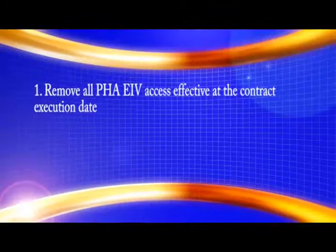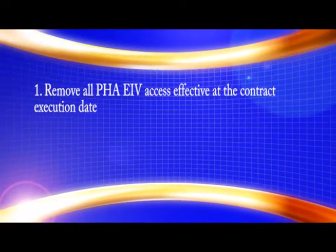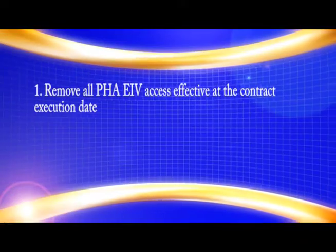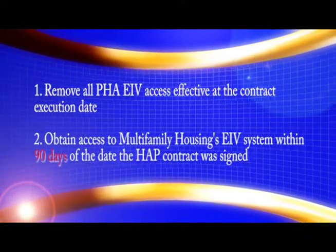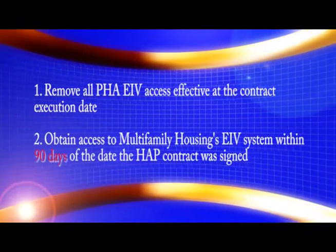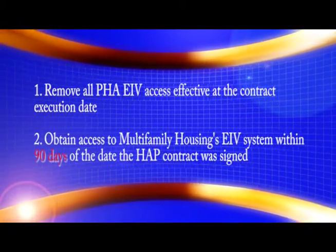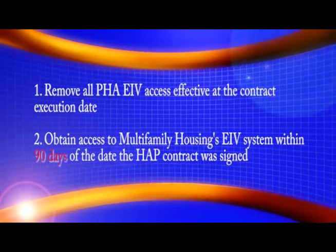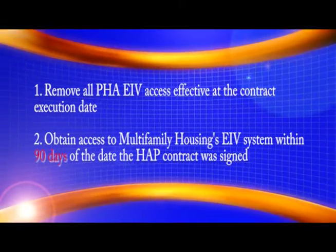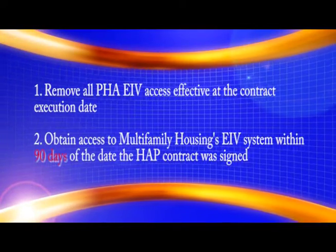PHAs converting to PBRA have two major EIV changes after closing. First, remove all PHA EIV access effective at the contract execution date. Secondly, obtain access to the Multifamily Housing EIV system within 90 days from the date the HAP contract was signed.